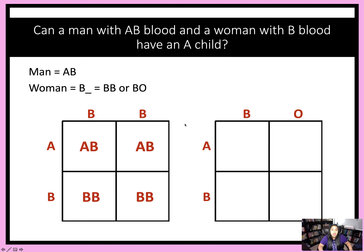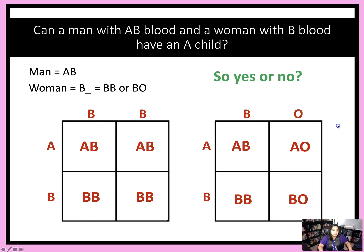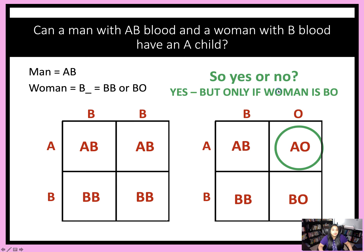So let's go ahead and try the first Punnett square. You get AB, AB, BB, and BB. So if we're looking at this situation, this couple cannot have an A blood type child. Let's try the second Punnett square — we can see that there is a 25% chance that they can have a child with A blood type. So now we must answer the question: is it yes or no? That's right, it's yes, but only if the woman is BO for her genotype.